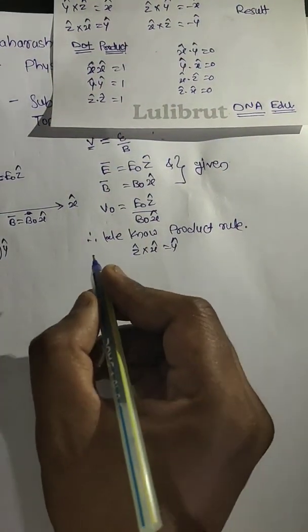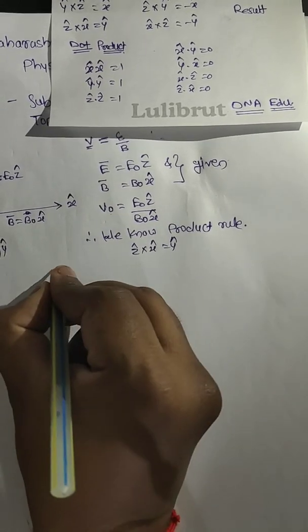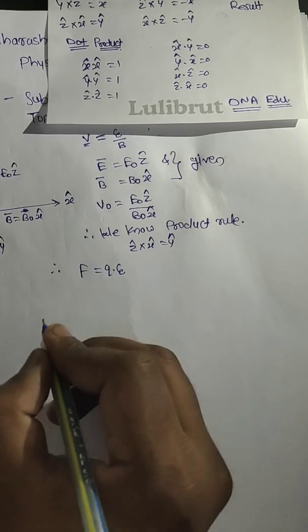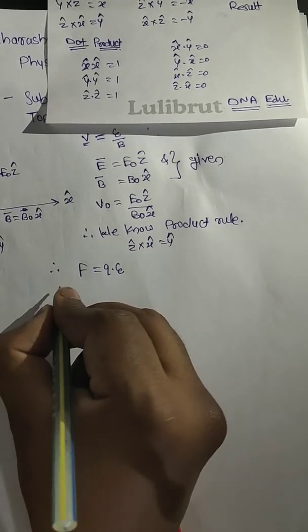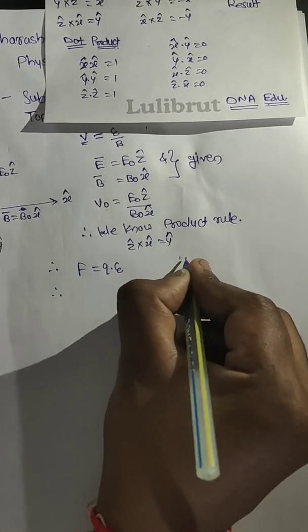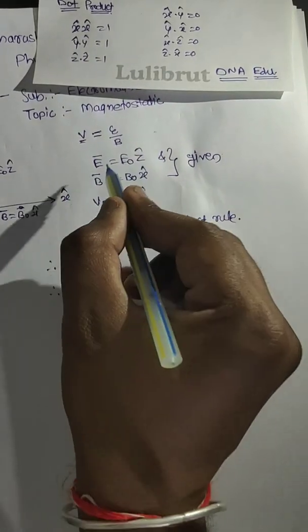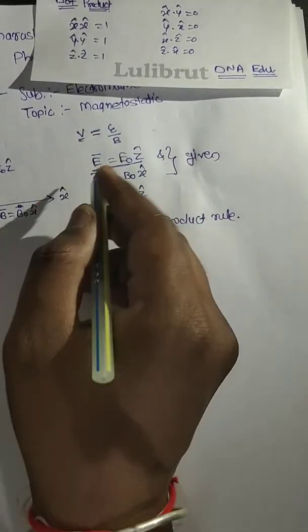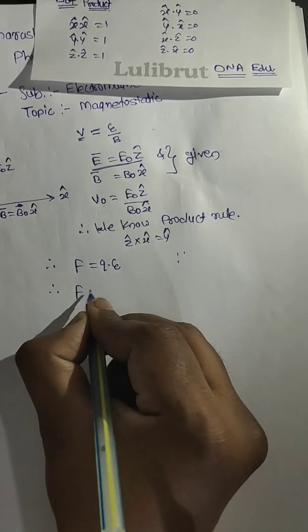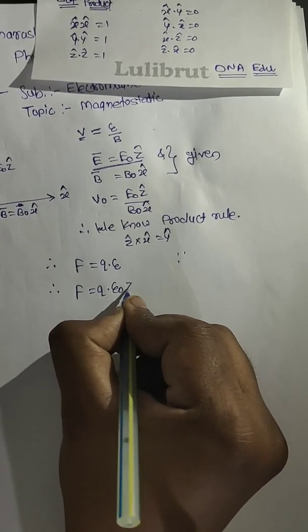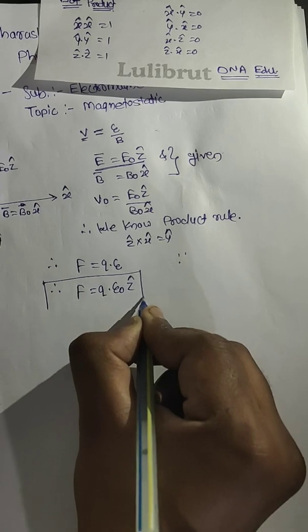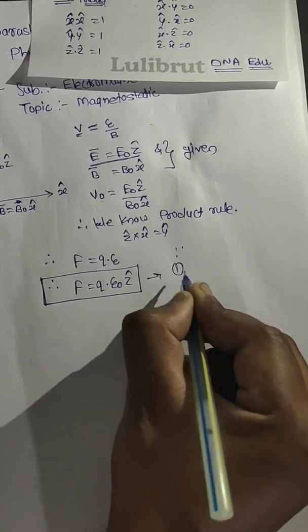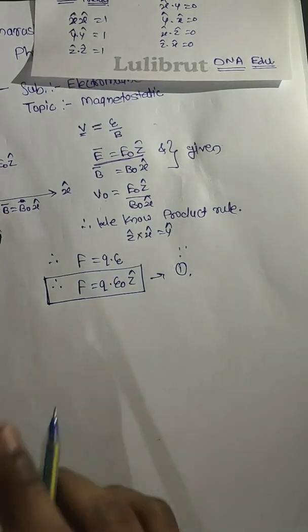We know electric force formula F is equal to q into E, right? So each direction given is equal to q into E₀ in z cap. Suppose this is first equation in z cap direction.